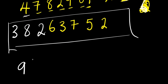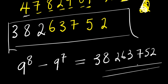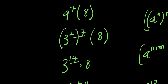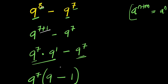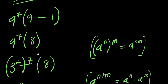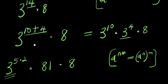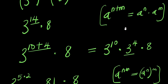So this becomes our answer for nine to the power eight minus nine to the power seven. Without a calculator, we have thirty-eight million, two hundred and sixty-three thousand, seven hundred and fifty-two. To summarize: express the exponent eight as seven plus one, apply the identity to factor out nine to the power seven, then find the value of nine to the power seven by expressing nine as three squared.